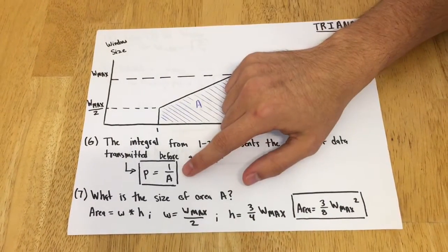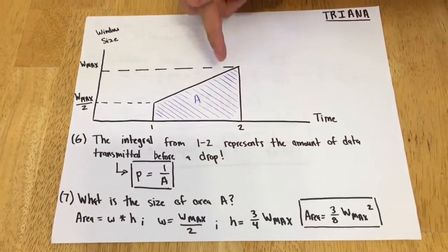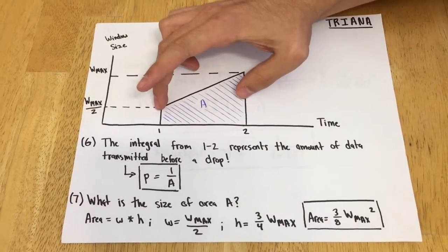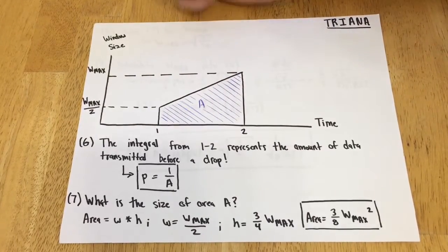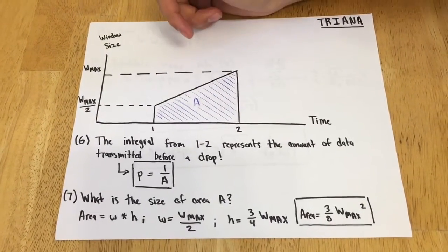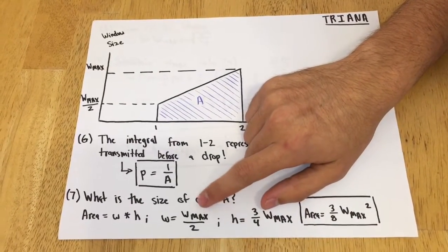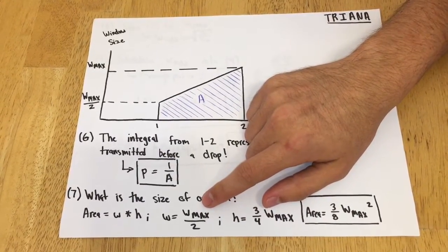Now that we have this simple relation—the probability of a drop is 1 over the shaded area—we can calculate this area A. The way we do that is width times height. We already calculated the height, which is 3/4 W_max. The quantity we now want to look at is W, which equals the width, and it turns out to be W_max over 2.